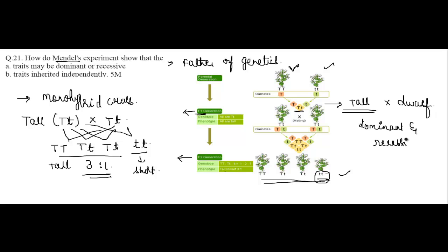In this way, Mendel's experiment with tall and dwarf pea plants showed that traits may be dominant or recessive. He concluded that the trait which shows its expression in the presence of a contrasting character is known as dominant, and the other trait which is suppressed by the dominant character is known as recessive.